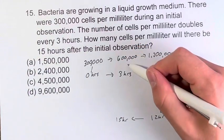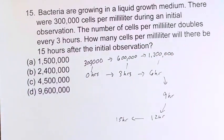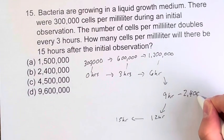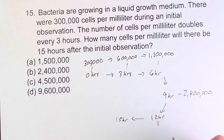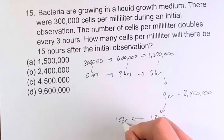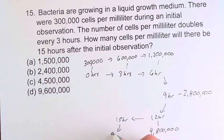So we have 300,000, 600,000, 1.2 million. Double that is 2.4 million. Double that again, 4.8 million. And double that again, 9.6 million.